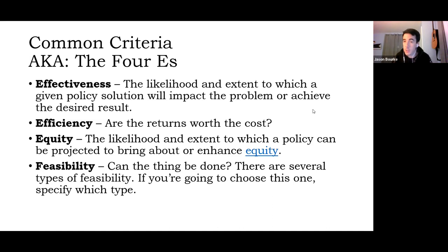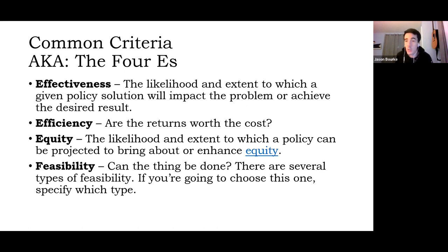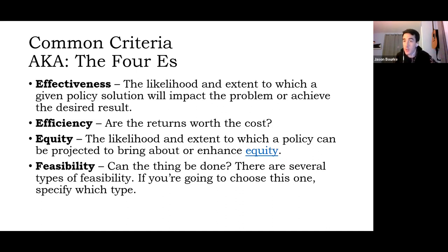Efficiency is something you're all pretty familiar with. It's the likelihood that the returns to a policy will be worth the cost we spend to implement it. Every policy we recommend is going to come with a cost — someone's going to have to pay for it — and we want to make sure we're spending those dollars well. Some students confuse efficiency and effectiveness or use these terms interchangeably. Effectiveness is the impact — the level to which we reach the desired end. Efficiency is how many resources we spend getting to that point.